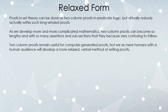Two-column proofs remain useful for computer-generated proofs — here's a statement, justified how; here's a statement, justified how. It's very algorithmic. But we humans tend not to like working things through in that lengthy and onerous way. So we're going to develop a more relaxed and verbally based method of constructing proofs.